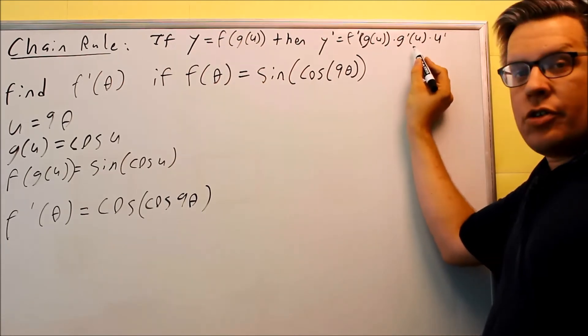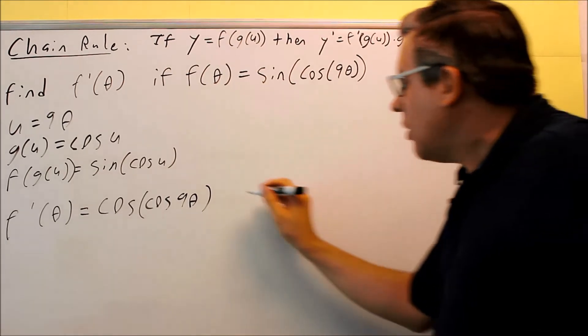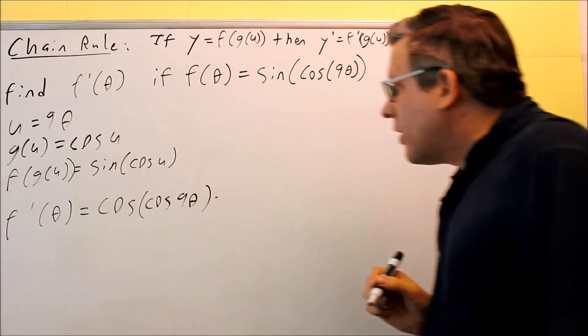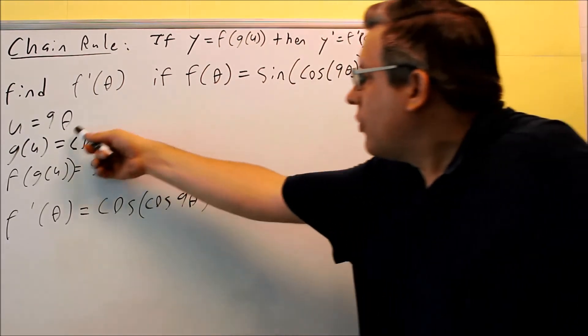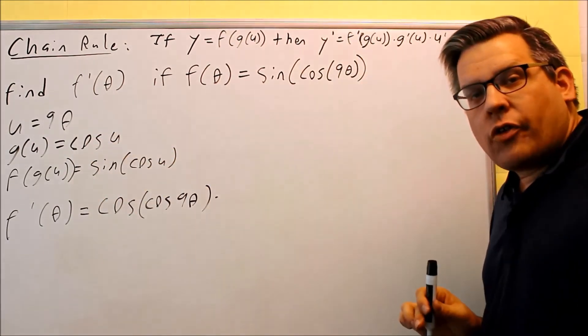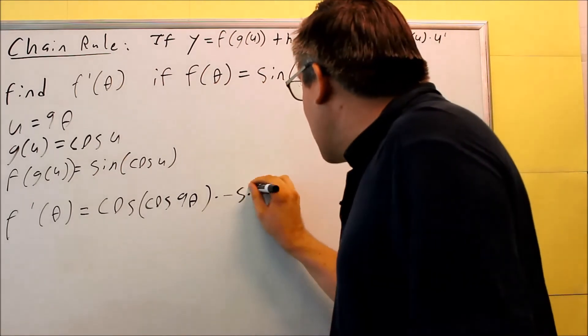The second part, we want to do g primed of u. All right, so we're going to multiply this by the derivative of cosine. The derivative of cosine is negative sine.